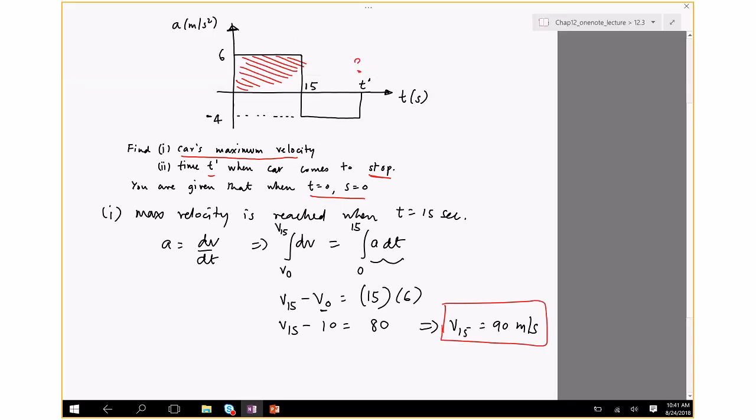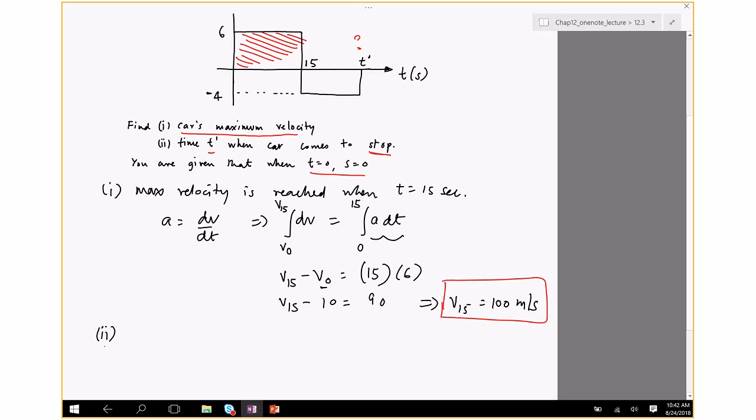So V15 minus 10 equals, I think it's 80. So V15 equals 90 meters per second. 100? Oh, it's 90?